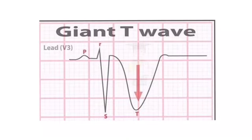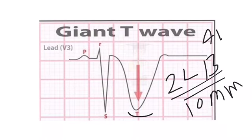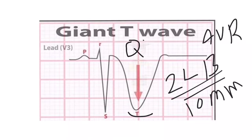Giant T wave inversion means the T wave is more than two large boxes, or 10mm, plus inversion in all leads except AVR. Another feature added to Giant T wave inversion is a prolonged QT interval.